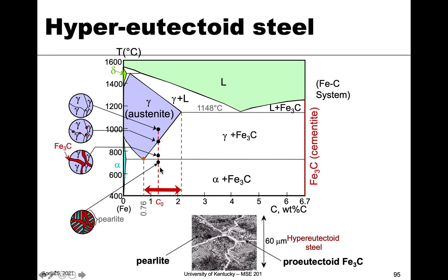So basically hyper eutectoid that we're talking about here is going to have pro eutectoid cementite. And then hypo eutectoid, which we just talked about, we'll have a composition over here and we'll have pro eutectoid ferrite because of this phase field here, as opposed to the phase field here.